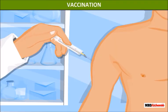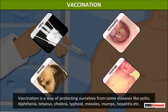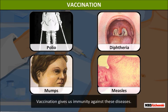Vaccination is a way of protecting ourselves from some diseases like polio, diphtheria, tetanus, cholera, typhoid, measles, mumps, hepatitis, etc. Vaccination gives us immunity against these diseases.